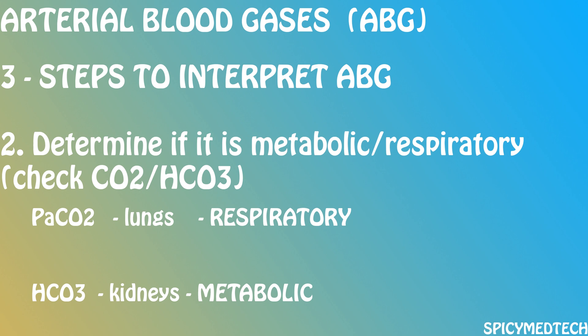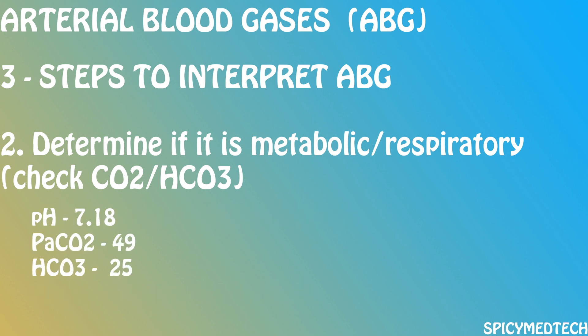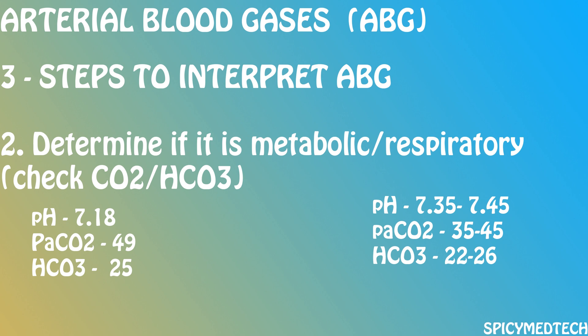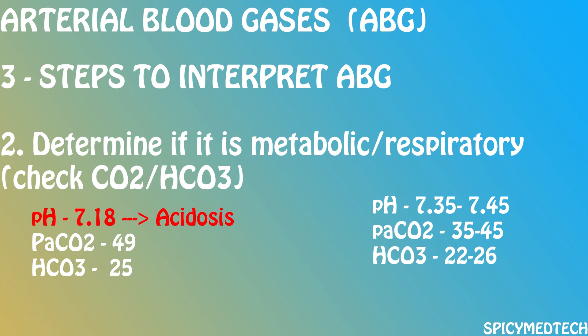Let's tackle a few examples. A pH of 7.18, a CO2 of 49, and an HCO3 of 25. Normal values: pH 7.35–7.45, PaCO2 35–45, HCO3 22–26. The pH is below 7.35, so it is an acidosis. The CO2 is at 49, which is outside the normal range of 35–45, so it is abnormal. The HCO3 is at 25, which is within 22–26, so it is normal. Therefore the problem must be respiratory.